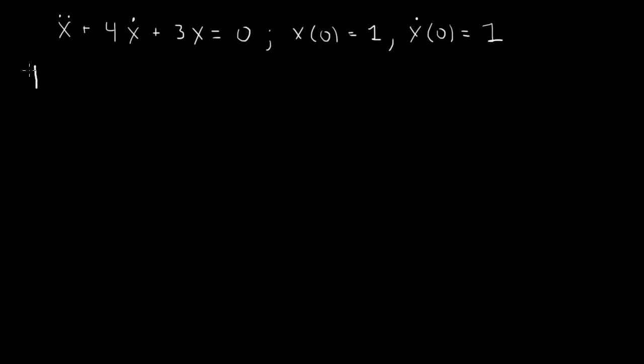To solve this we make a substitution. We try x equals e to the rt and substitute in. The second derivative brings down an r squared times e to the rt. Each term will have an e to the rt so we'll cancel that. Plus 4, the first derivative brings down an r, plus 3, and we cancel the e to the rt.